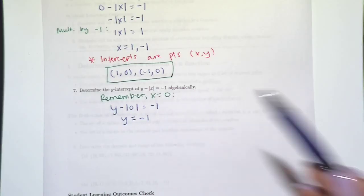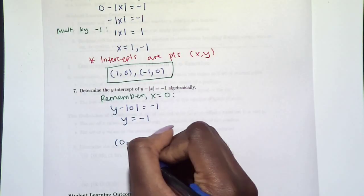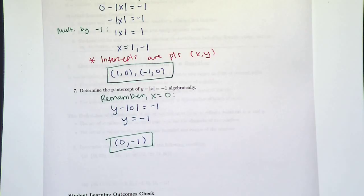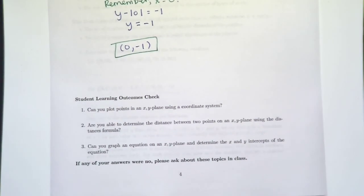Well, we said it from the beginning: x is zero. That is the answer: (0, -1). So at the bottom here, I want you to answer these questions yes or no, and if your answer is no, make sure you ask me in class to explain in more depth.